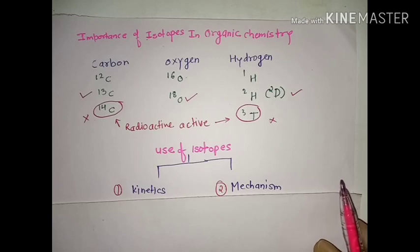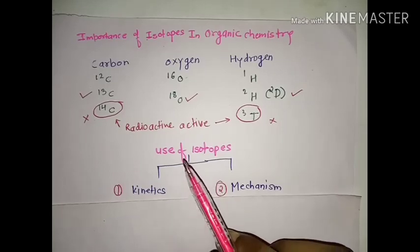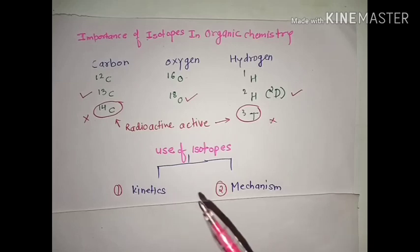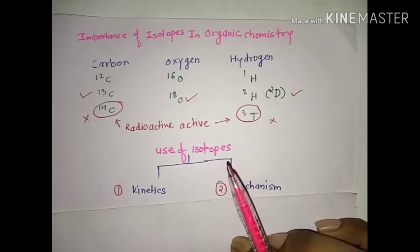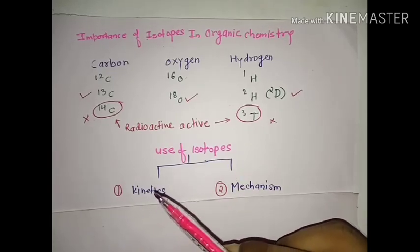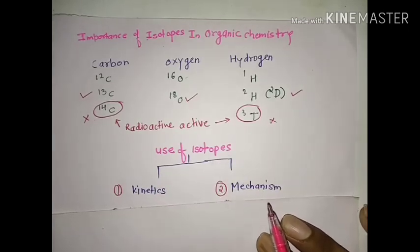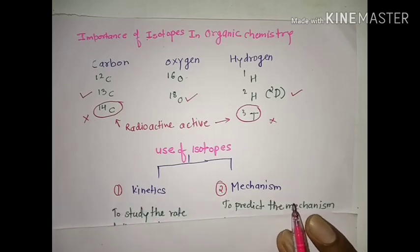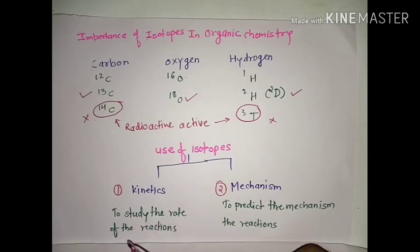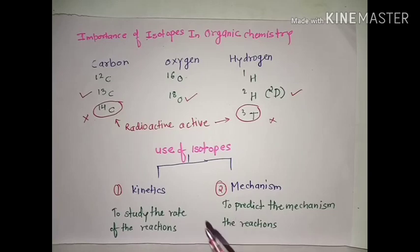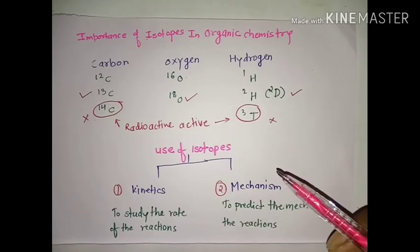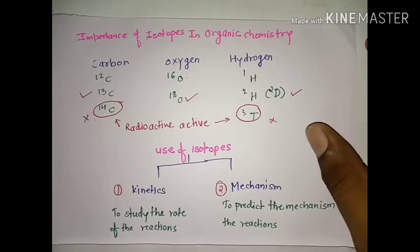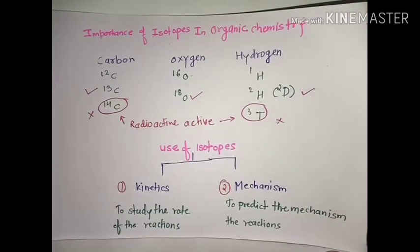There are two major uses of isotopes in deciding reaction mechanism. Firstly, we can determine the rate of the reaction and study the kinetics involved. Secondly, we can find out the mechanism involved in any reaction using these simple isotopes. To study the rate of reactions, we can perform kinetics studies, and we can also predict the mechanism of reactions. Let's see a simple example of how to decide the mechanism.